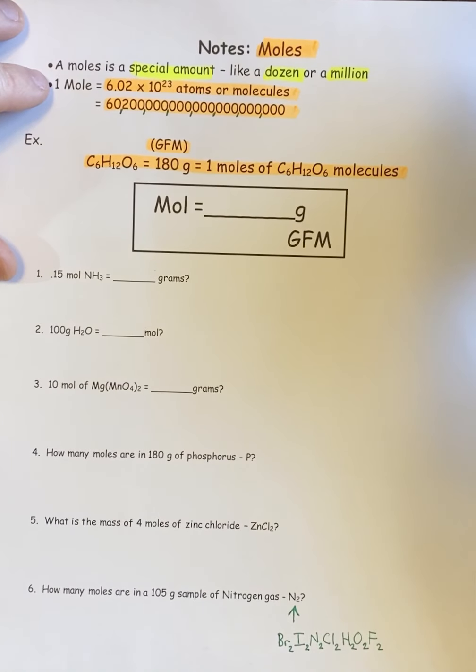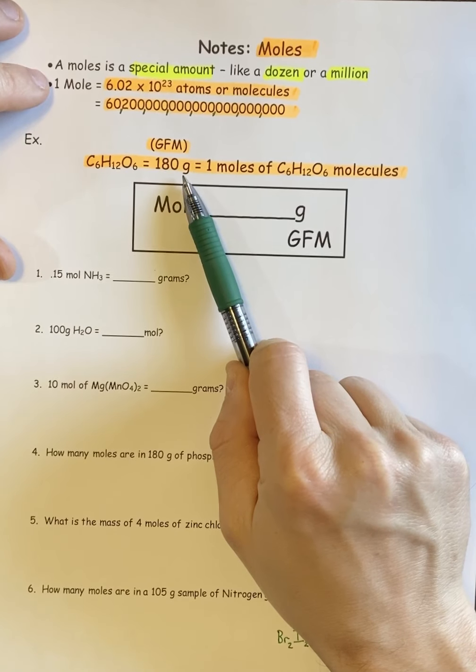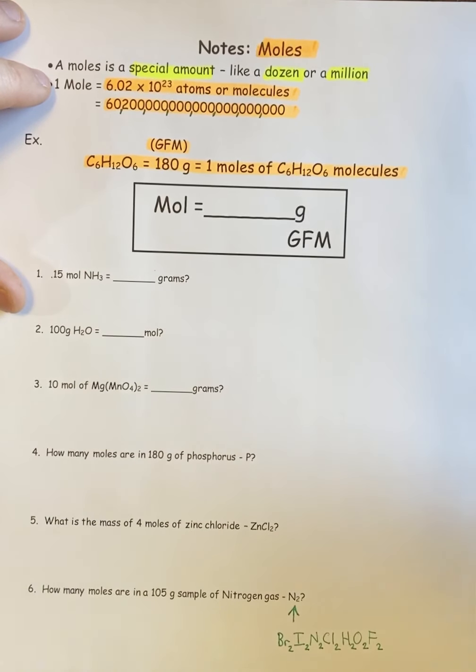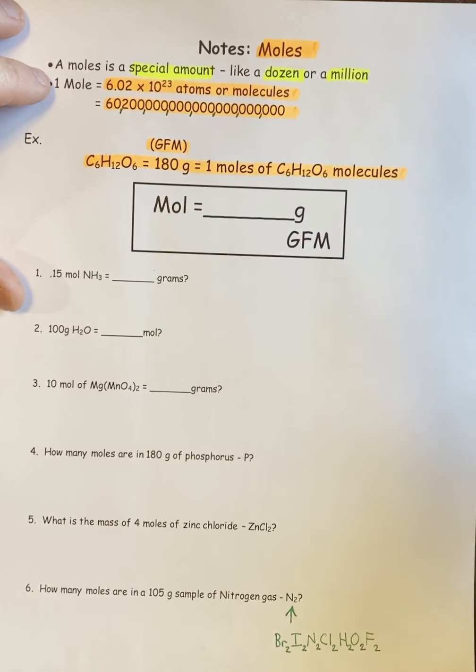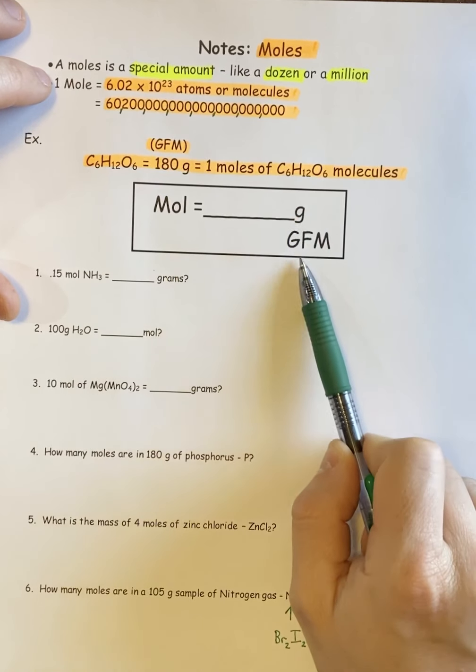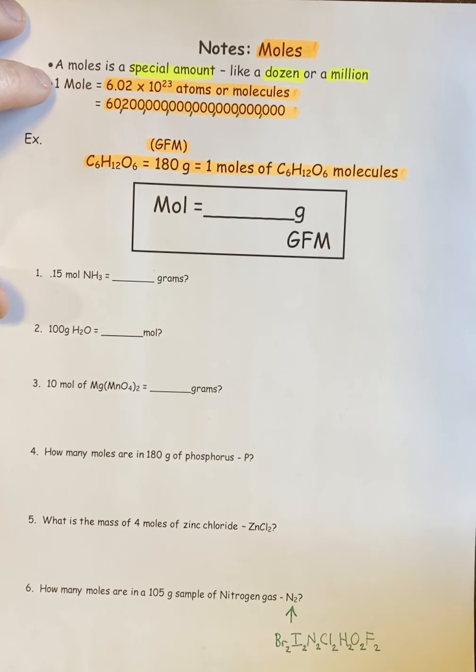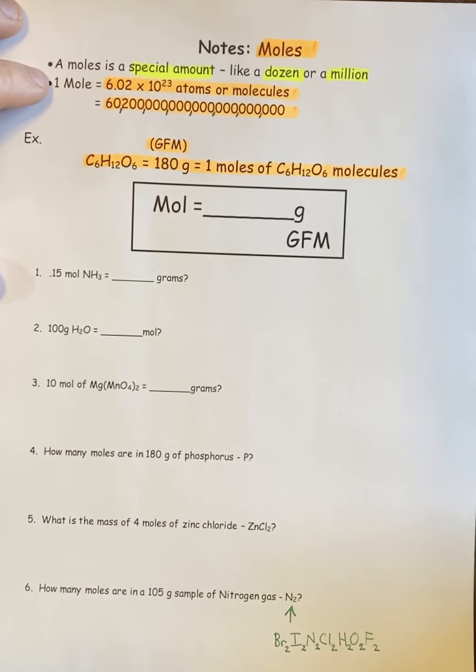Basically what the mole is used for is it allows us to take quantities that we would never be able to weigh on our own and puts them into more usable, workable terms, in other words, the gram. It's how many molecules you need to convert an atomic mass unit to a gram. Now there's a formula that we use. One mole equals the grams over the gram formula mass. We're going to do a couple problems, and then you're going to have Castle Learning on this.